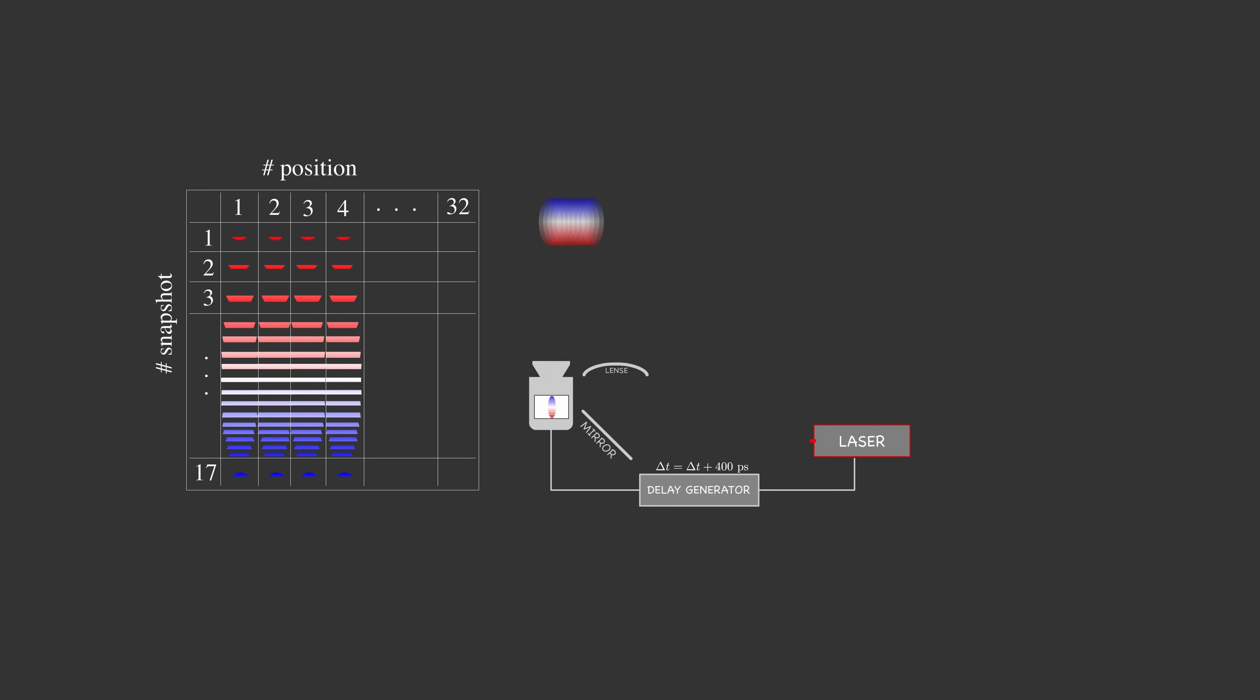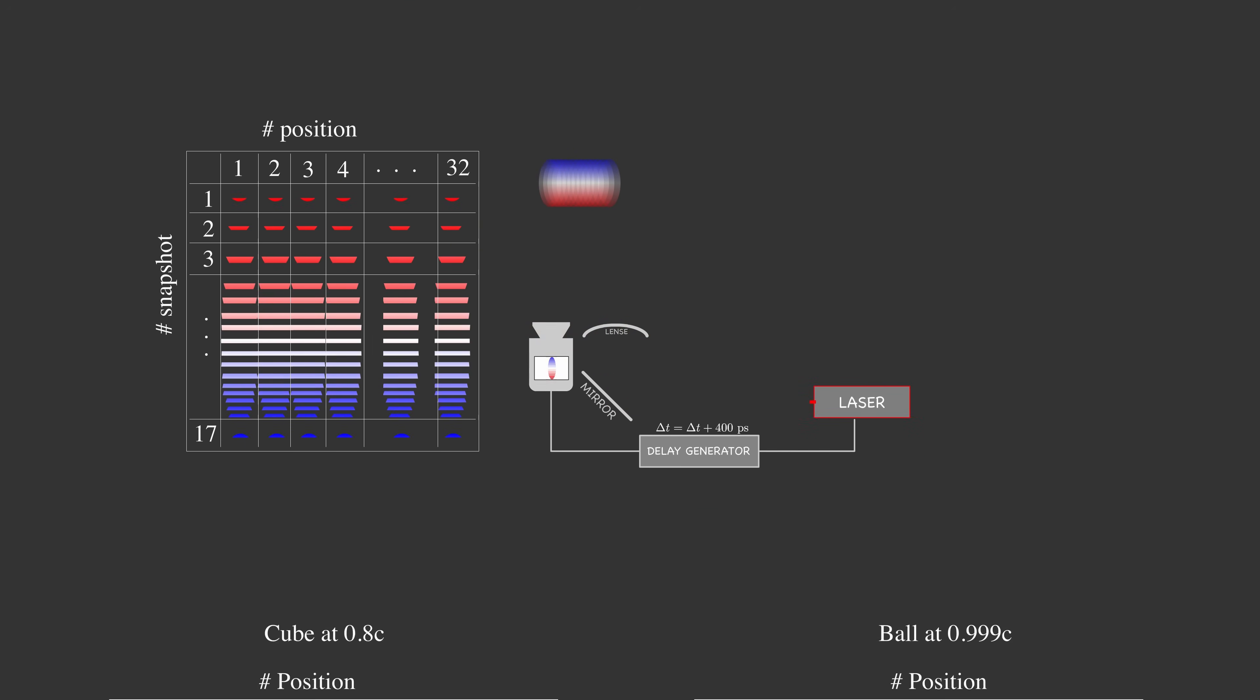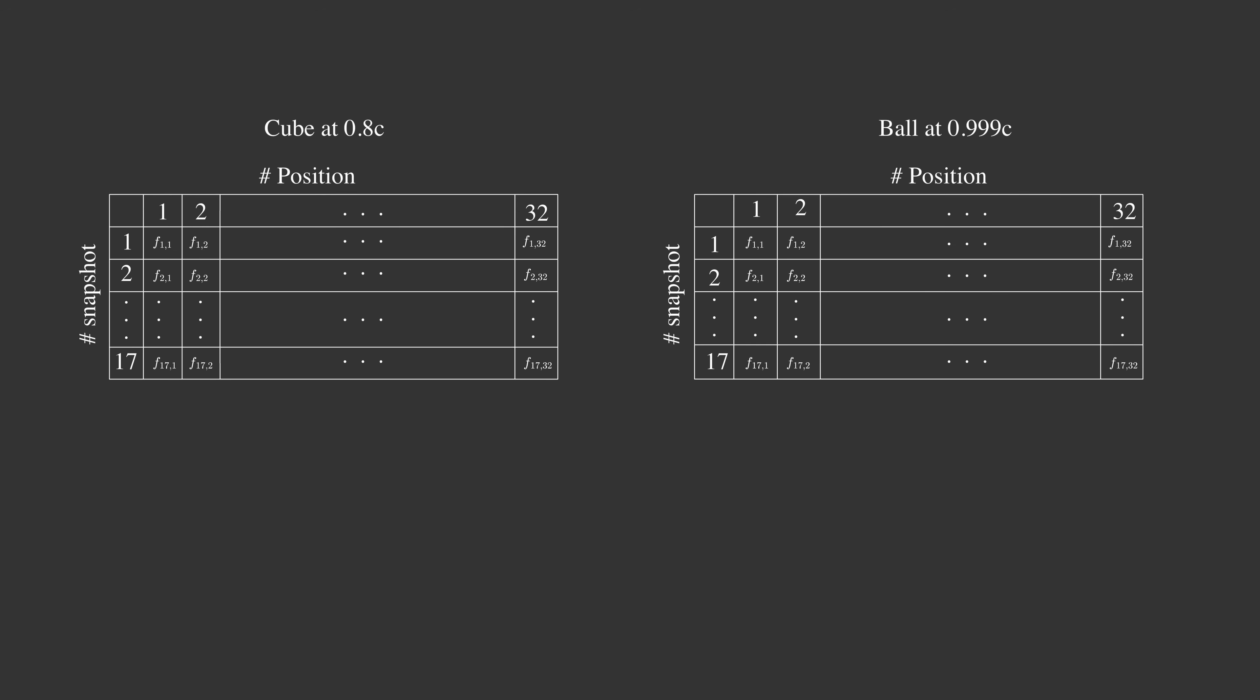Overall, they repeated the process for 32 different positions and two objects. The cube with the velocity of 0.8c and a ball with the velocity of 0.999c. Now, if you want a screenshot of moving object, then you have to take the diagonal snapshots of your table and put it into a single image.